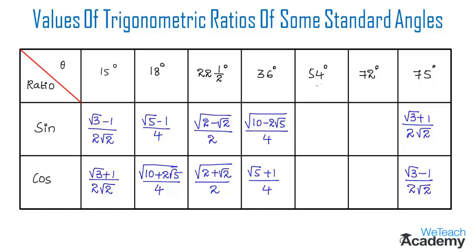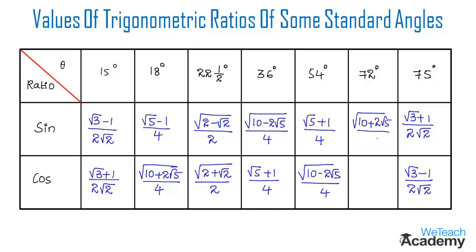Sine 54° = (√5 + 1) / 4, whereas the value for cos 54° = √(10 − 2√5) / 4. The next standard angle is 72 degrees: sine 72° = √(10 + 2√5) / 4, and cos 72° = (√5 − 1) / 4. Make a note of all these formulas.